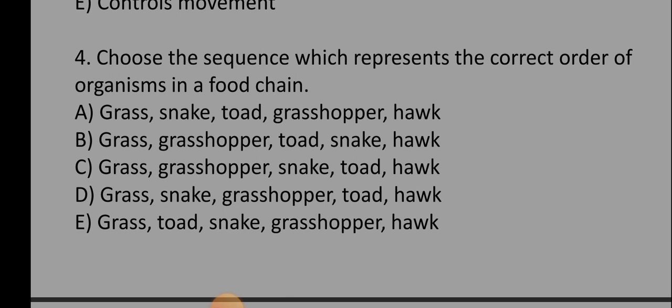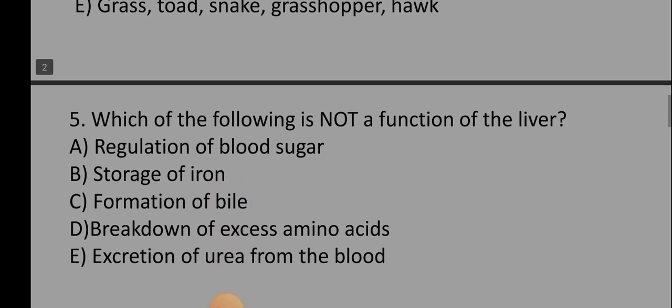Let's go to question 4, which is: Choose the sequence which represents the correct order of organisms in a food chain. A) Grass, snake, toad, grasshopper, hawk, B) Grass, grasshopper, toad, snake, hawk, C) Grass, grasshopper, snake, toad, hawk, D) Grass, snake, grasshopper, toad, hawk, E) Grass, toad, snake, grasshopper, hawk. So the correct option is option B, which is grass, grasshopper, toad, snake, and hawk.